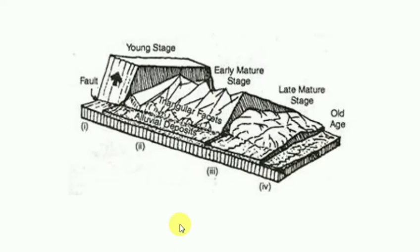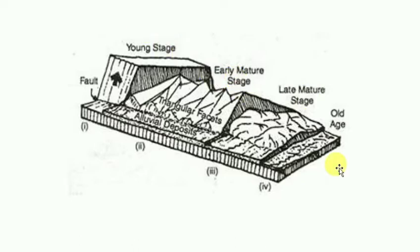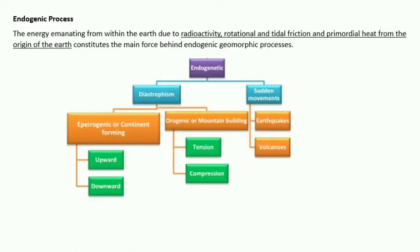The stages in erosion of a tilted fault block — due to erosional development of a fold scarp — show progression from young stage to old age. After diastrophism, we move to sudden movements, which involve two types: earthquakes and volcanoes.